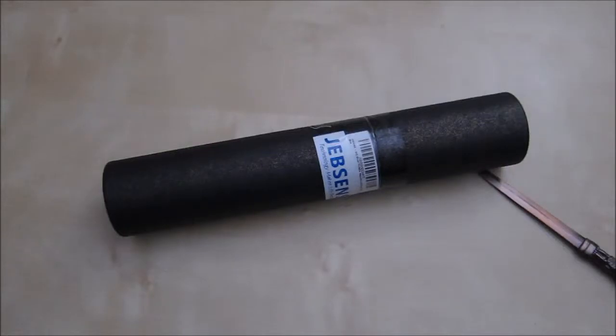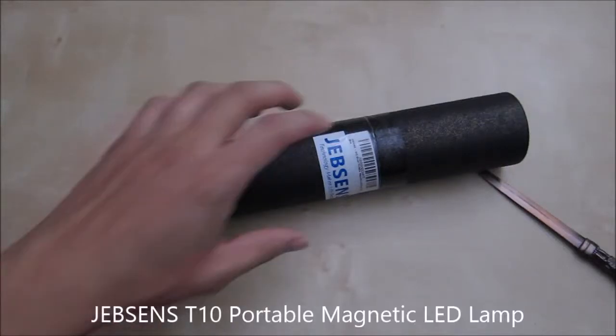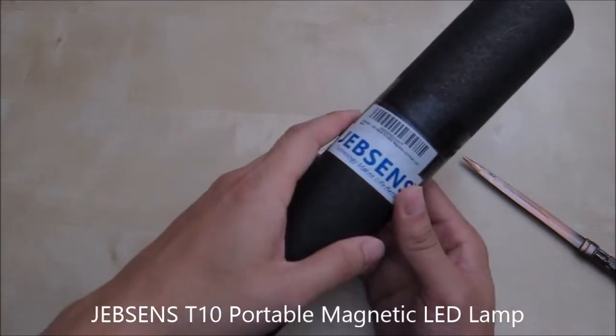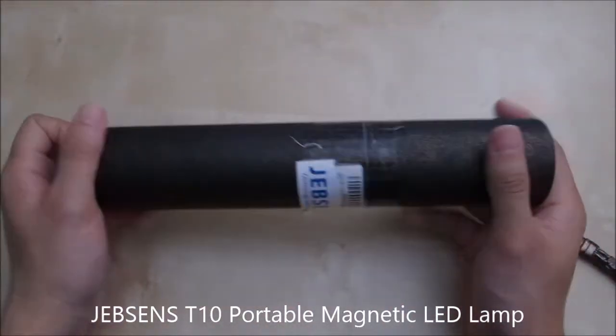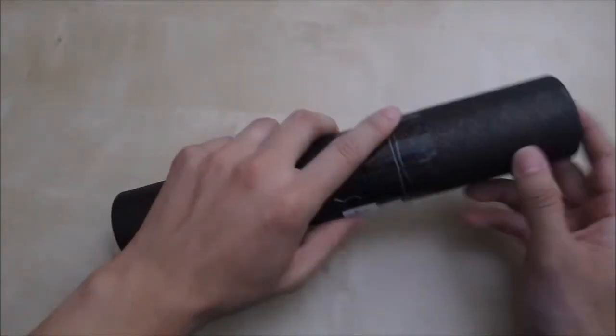Hi, this is an unboxing and review of the Jebsens T10 Portable Magnetic LED Light and Lantern. It comes in a little tube like this and inside is the device. So let's go ahead and open it up.